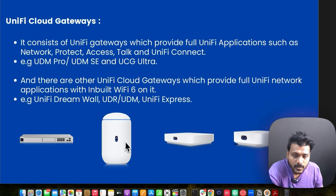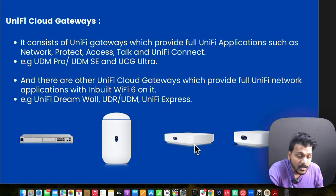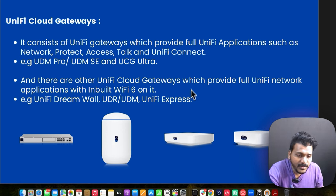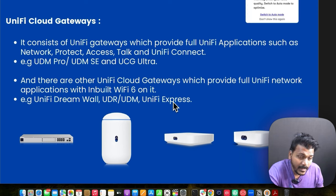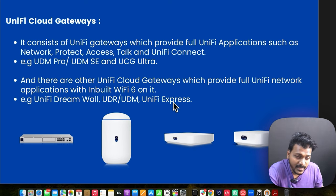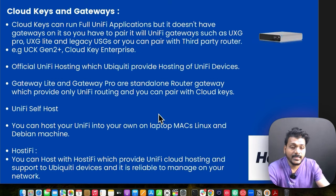Here you can see the images — the UDM SE, UDR, and the UDM base model with a small screen. This is the UniFi Cloud Gateway Ultra with multiple WAN ports, and this is the UniFi Express. All these UniFi Cloud Gateways have a gateway built in. Except for the UDM Pro and UDM SE, which don't have Wi-Fi, the other Cloud Gateways have Wi-Fi built in.